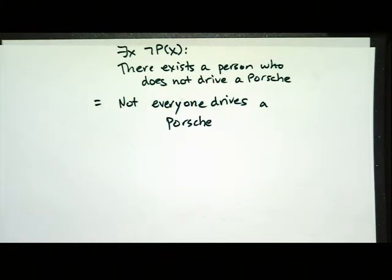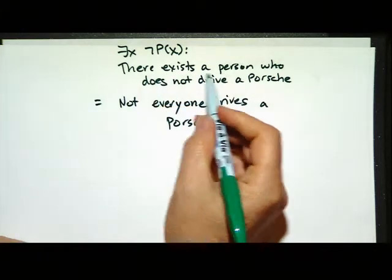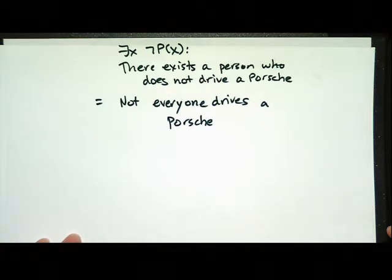These two things are equal but they don't look like they're equal. The opposite of 'there is a person' is 'not every person.' So the opposite of 'there is' is 'not every' or 'not any.' There exists a person who does not drive, and there exists with a not is the same as not everyone. We're going to look at that more later — I just want to introduce that into your brain. Then we'll do some other math examples and come back to the English.